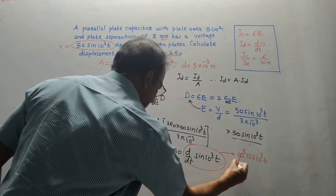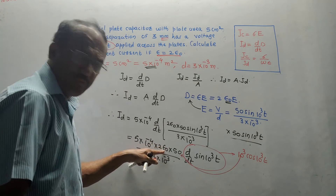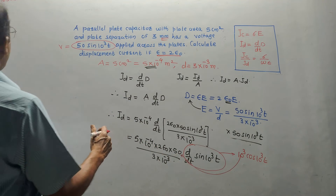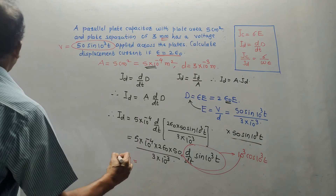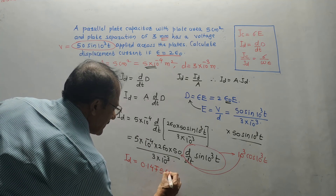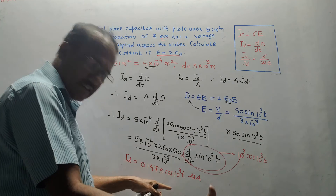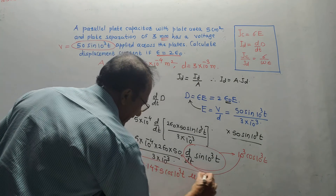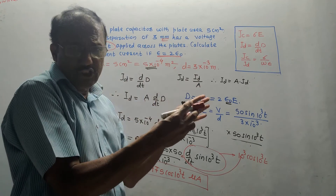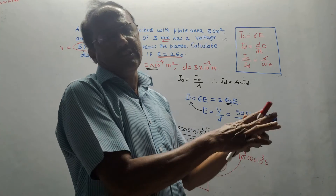Putting in the value of epsilon_0 as 8.854 × 10⁻¹² and simplifying all terms on the calculator, the final answer for ID is 0.1475 cos(10³ t) microamperes, since the result is in the order of 10⁻⁶. This is the final answer for displacement current. I have covered all types of variations of numericals expected for the displacement current topic. Thanks for watching — thank you very much.